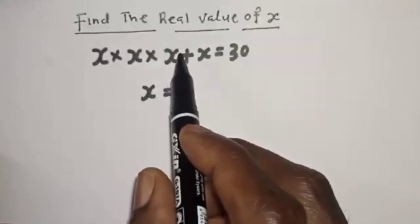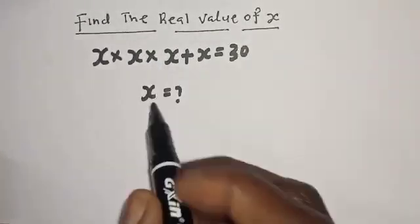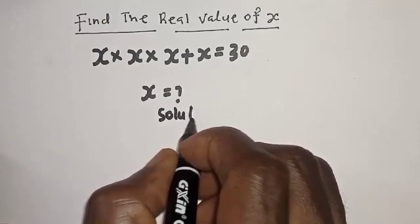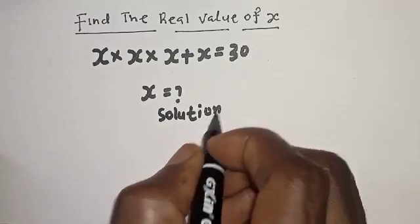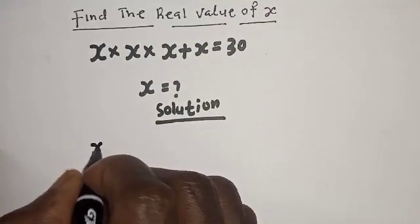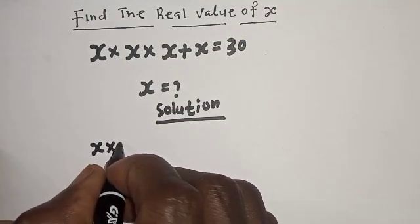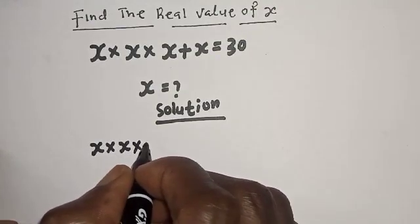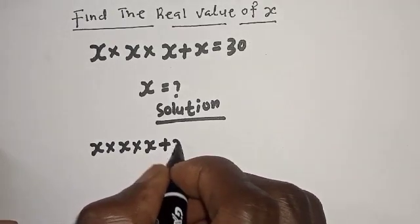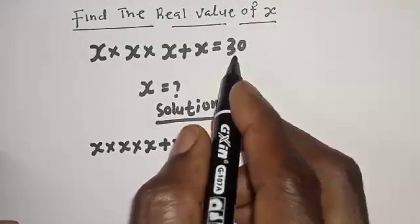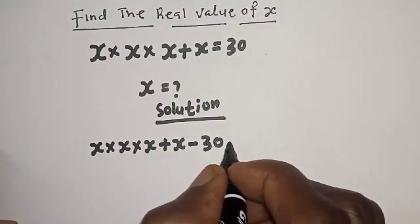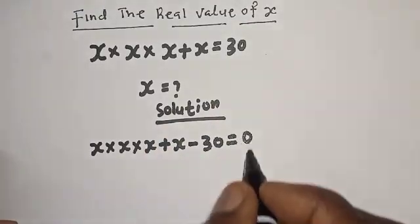But before we proceed, please don't forget to like, share, comment and subscribe. Solution: we have s multiplied by s multiplied by s plus s. If we bring 30 to this side it becomes minus 30, equal to zero.